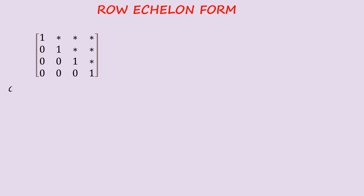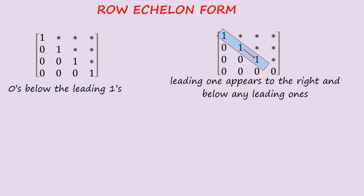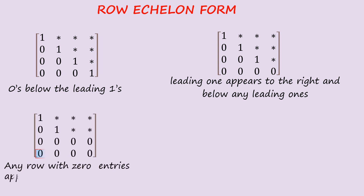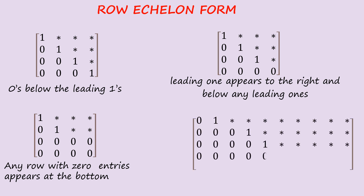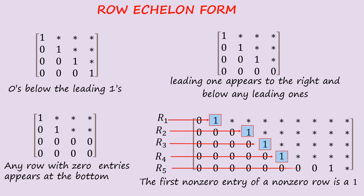Consider examples for the properties of row echelon form. For the first matrix, zeros appear below the leading ones. For the second matrix, the leading one appears to the right and below any leading ones. For the third matrix, any row with zero entries appears at the bottom. And for the fourth matrix, the first non-zero entry of every non-zero row is a 1 — rows 1, 2, and 3 all have 1 as their first non-zero entry.